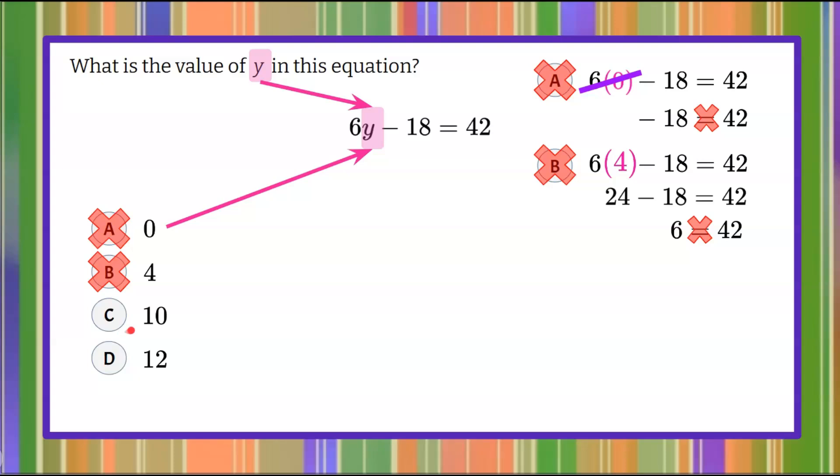All right, let's try c. Answer c gives us a value for y of 10. So over here in our workspace, we're going to write our equation: 6 multiplied by 10 subtract 18 needs to equal 42, if it's answer choice c. 6 multiplied by 10 is 60. 60 subtract 18 is 42. It checks. So the value of y for this equation is y equals 10.